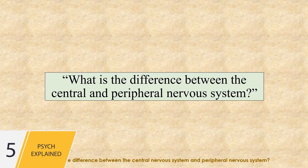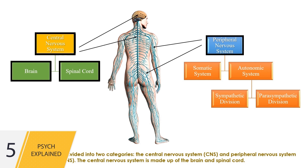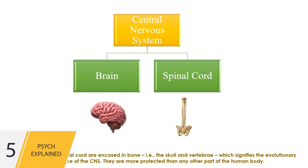What is the difference between the central nervous system and peripheral nervous system? Our nervous system is divided into two categories: the central nervous system and peripheral nervous system. The central nervous system is made up of the brain and spinal cord. Both are encased in bone — the skull and vertebrae — which signifies the evolutionary importance of the CNS.